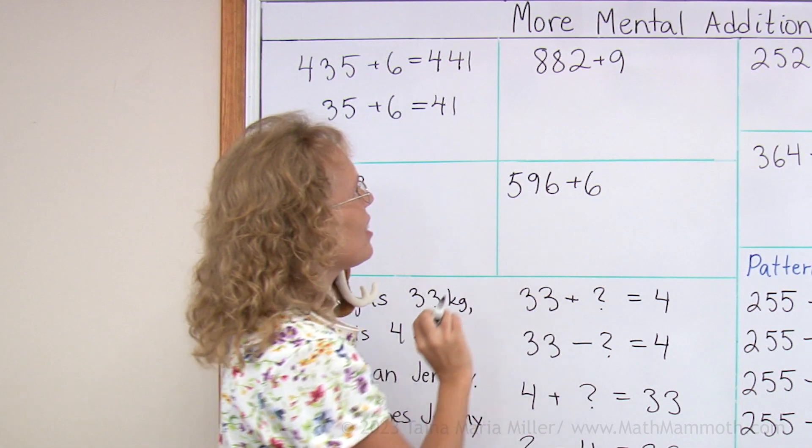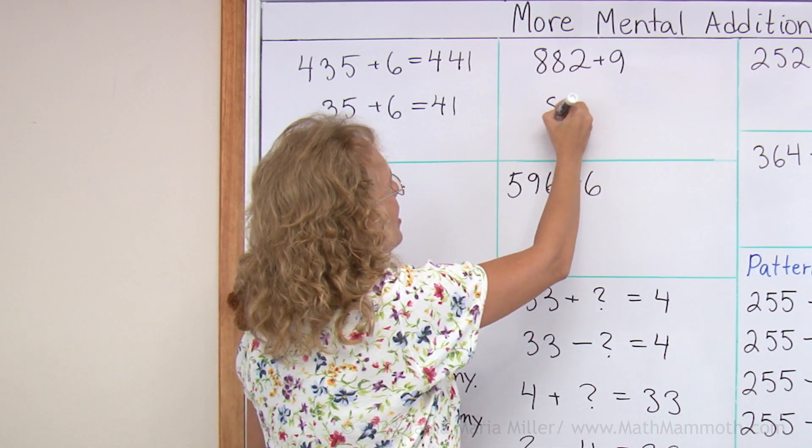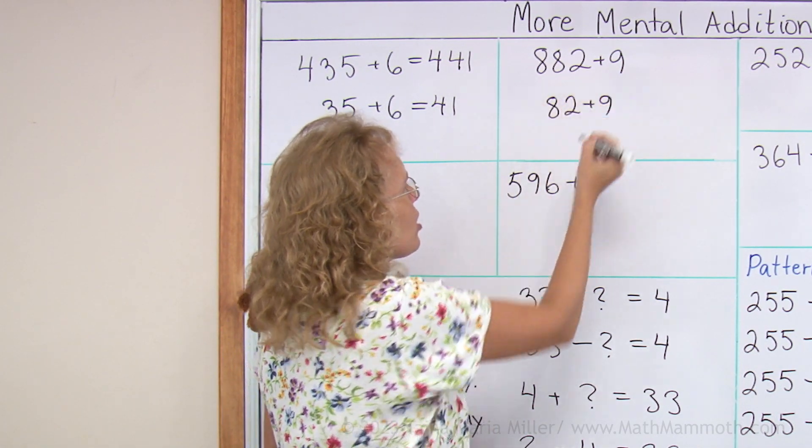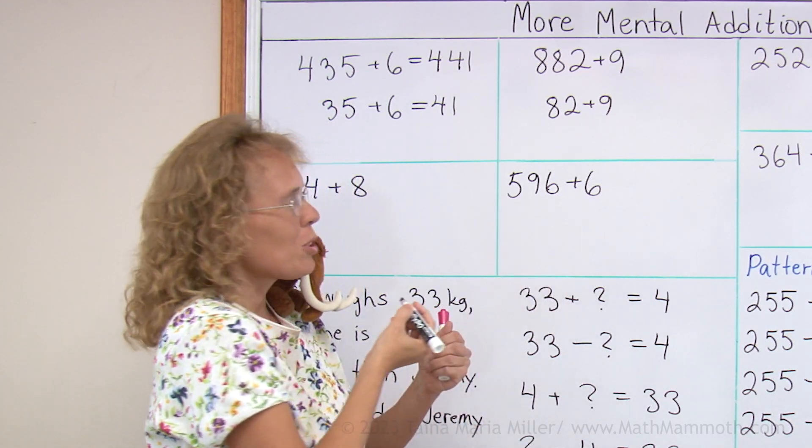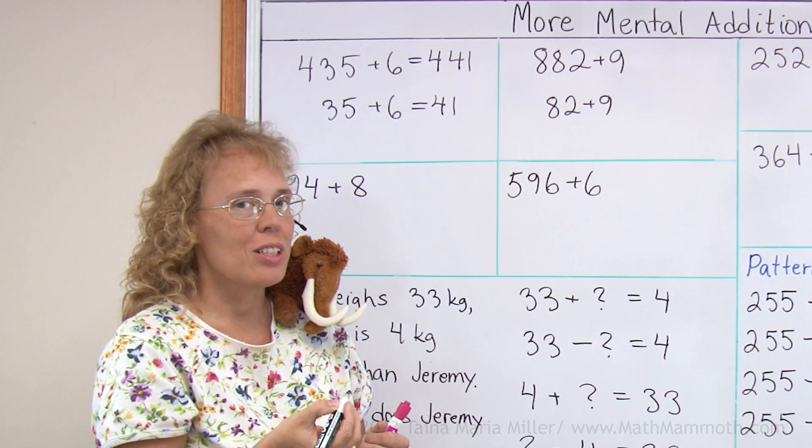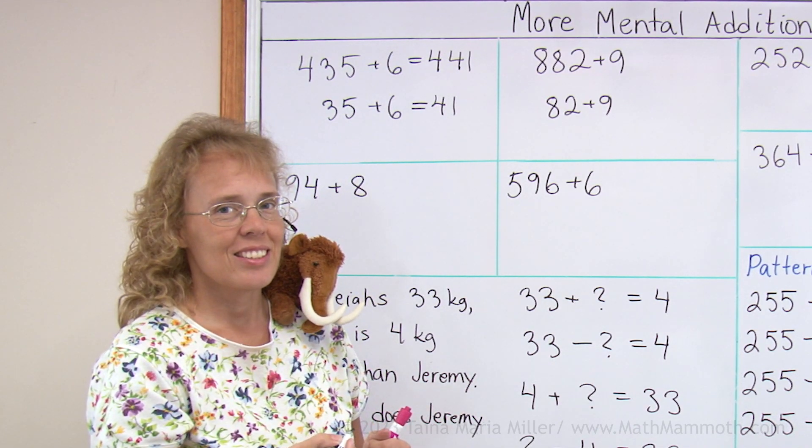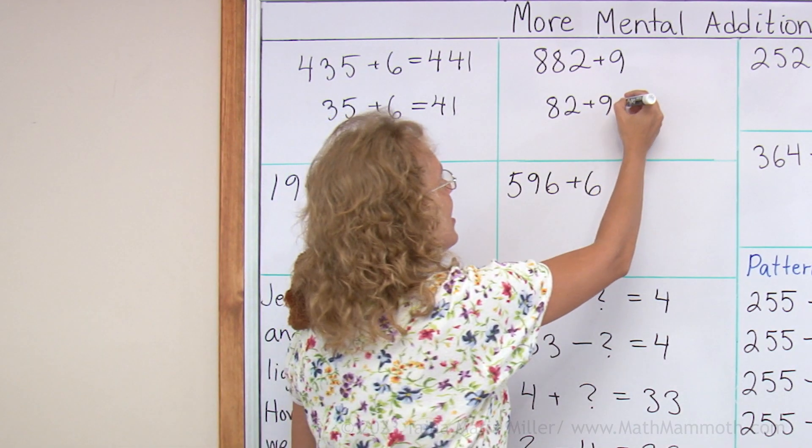Let's try this one too. 882 plus 9. Okay, just take the 82 plus 9, solve that. And that's almost 82 plus 10, which would be 92. It's one less than that. So it's 91. This is 91.